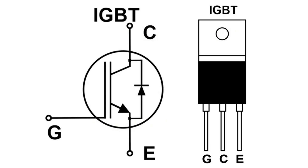What is IGBT, Insulated Gate Bipolar Transistor, and how does it work? An Insulated Gate Bipolar Transistor, IGBT, is a semiconductor device commonly used in power electronics to switch or amplify electrical power in applications such as motor drives, electric vehicles, renewable energy systems, and industrial controls.